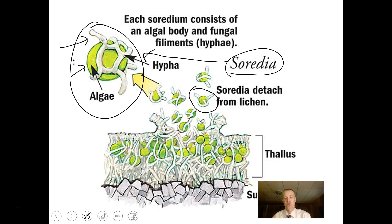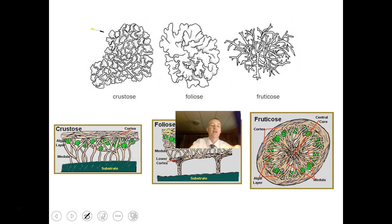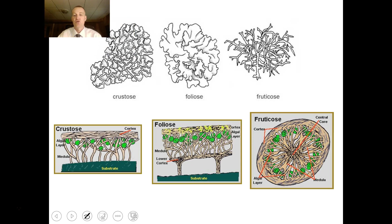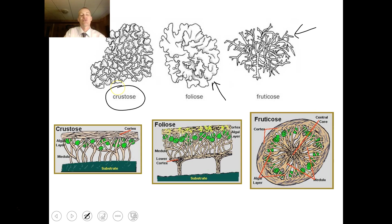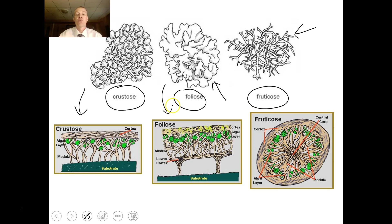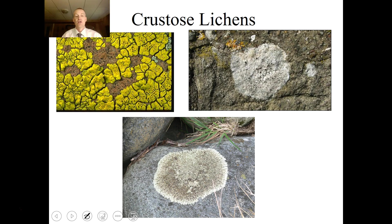Lichens are important indicators of air quality. If you go to a city without lichens, that usually indicates air pollution — toxins like mercury kill lichens. If you see lichens on trees, it may indicate good air quality. There are three kinds of lichens: crustose lichens, which are crusty and found on rocks, stones, or brick pavement; foliose lichens, which are more leaf-like and found on tree bark; and fruticose lichens, which are shrubby. Some of these crustose lichens can be really old.